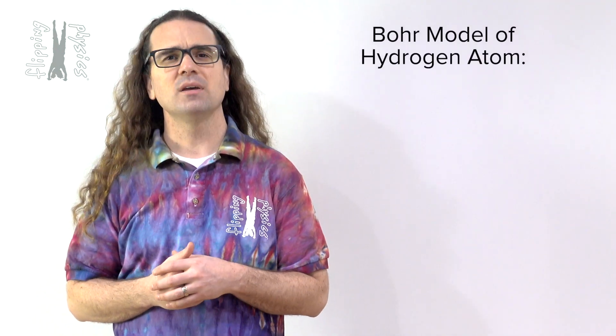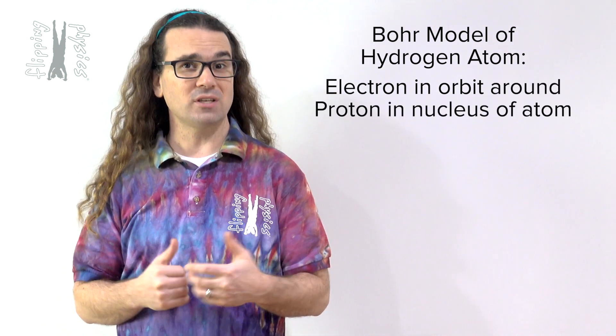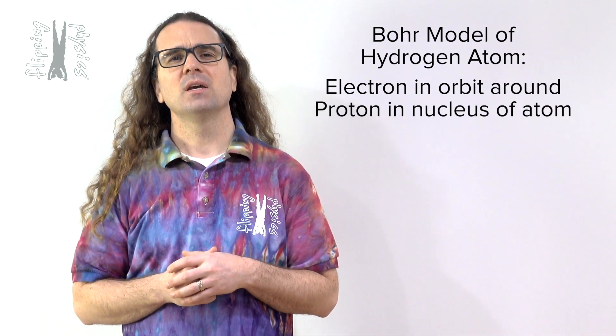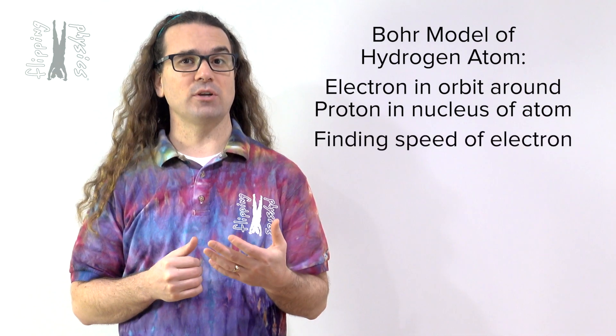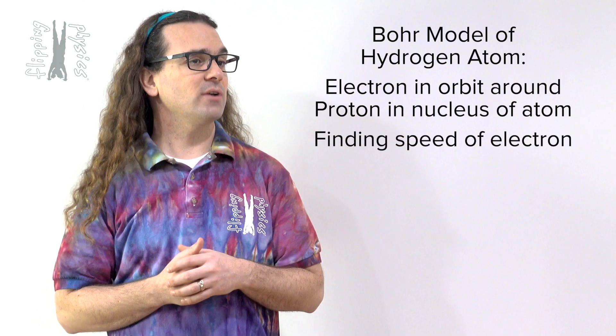Good morning. According to the Bohr model of the hydrogen atom, there is one electron in orbit around one proton, and the proton is the nucleus of the atom. We are going to determine the speed at which the electron moves. Bobby, please read the problem, and Billy, please translate.